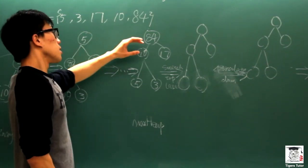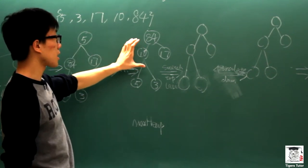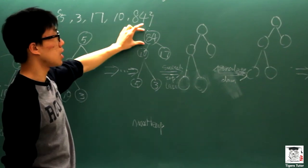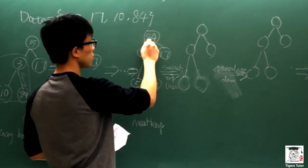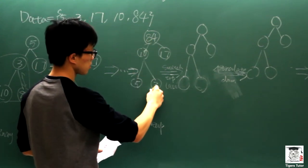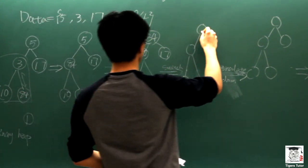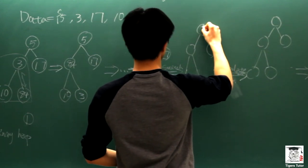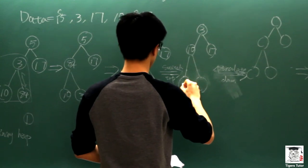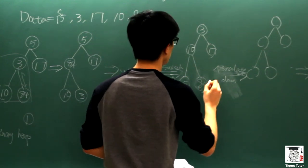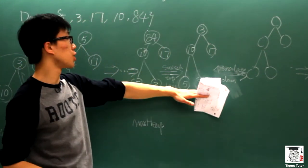So here comes the trick. We switch the top element with the last element in the array. So here we switch 84 with 3.